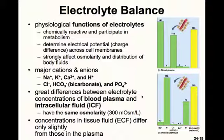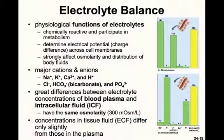There are big differences in the electrolyte concentrations of blood plasma and intracellular fluid. Blood plasma is shown in the top figure and intracellular fluid concentrations below. You'll notice that sodium is much higher in the plasma than in intracellular fluid, and potassium is the opposite. Chloride is high in blood plasma but low in intracellular fluid, and phosphate is high in intracellular fluid but low in blood plasma.